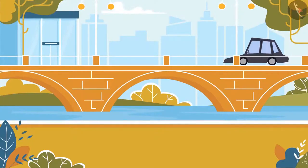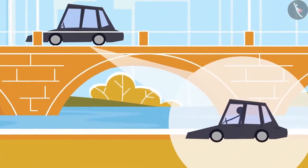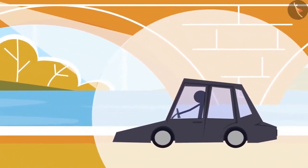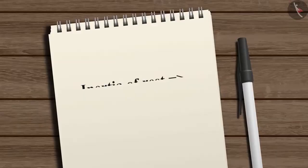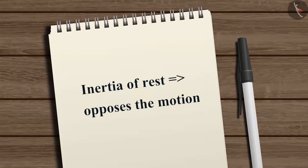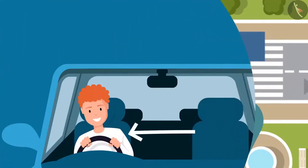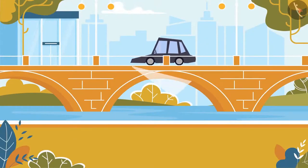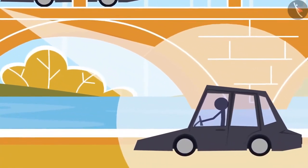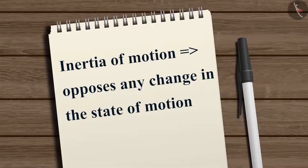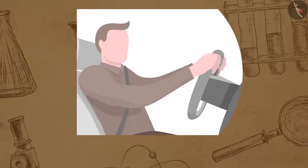Consider the example of a car: if it suddenly starts moving, your upper body tends to move backwards. This is due to the inertia of rest of our body, which opposes the motion. When the car takes a sharp turn, our bodies tend to move to the opposite side of the turn due to the inertia of motion. Also, when brakes are applied, our bodies tend to move forward due to the inertia of motion. That is why safety belts are worn to prevent accidents.